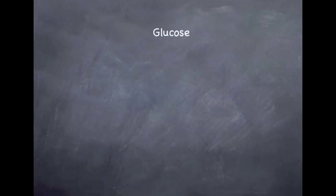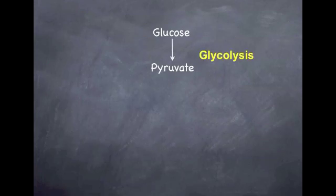Similarly to anaerobic respiration, aerobic respiration begins with glycolysis, where glucose is broken down into pyruvate and gives you a net of 2 ATP. This happens in the cytoplasm.